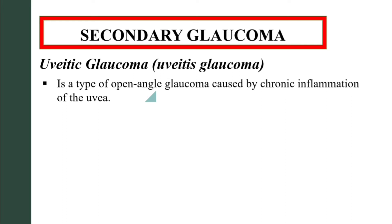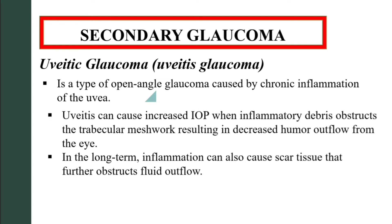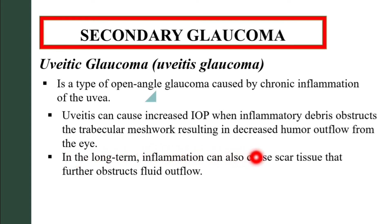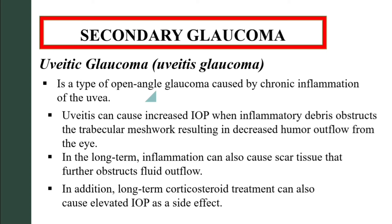You can see neovascularization illustrated here. Next is uveitic glaucoma: this is a type of open-angle glaucoma caused by chronic inflammation of the uvea. Uveitis can cause increased intraocular pressure when inflammatory debris obstructs the trabecular meshwork, resulting in decreased aqueous humor outflow. In the long term, inflammation can also cause scar tissue that further obstructs fluid outflow.